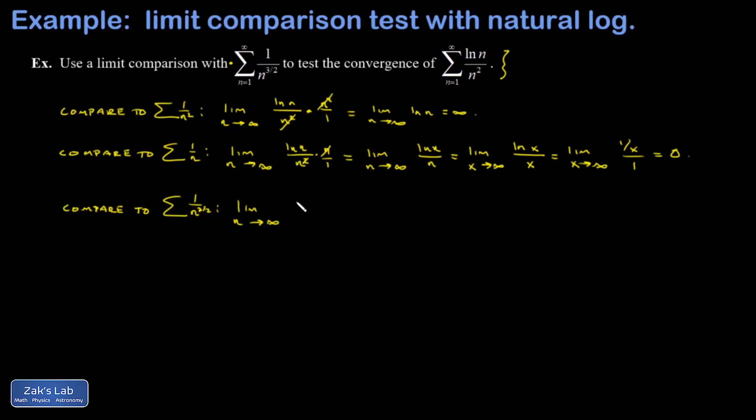So I get the limit as n goes to infinity. Natural log n over n squared is our original series. And then divided by 1 over n to the 3 halves. So just write it as multiplying by the reciprocal. All right, n squared is n to the 4 halves. So when I cancel n to the 3 halves out of that, I end up with just the n to the 1 half in the denominator. In other words, the square root of n.